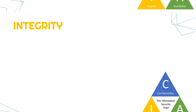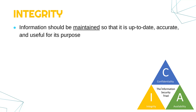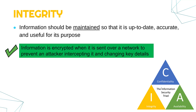The second principle is integrity. Integrity is all about the idea that information should be maintained and looked after so that it is up to date, accurate, and useful for its purpose — it needs to be kept in a useful state. One way a company might increase integrity is to encrypt information when it is sent over a network, to prevent an attacker intercepting messages and changing key details. With encryption the data is scrambled up, so the attacker can't really do much with it — they can't change it and damage it.